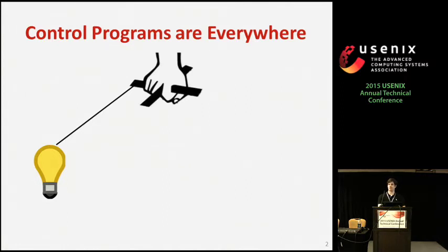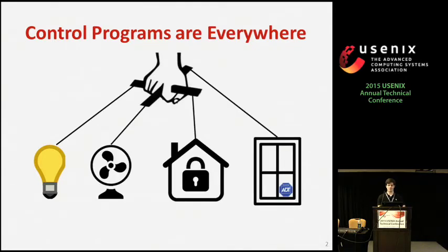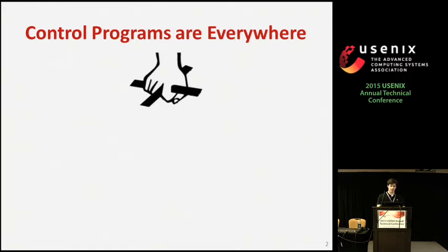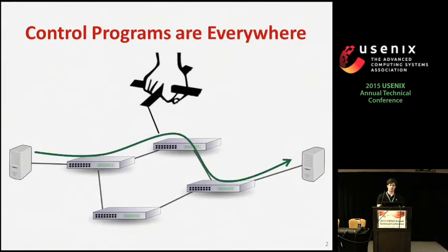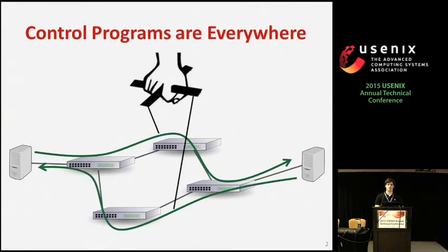We focused on two different control systems: home automation and software-defined networks. In home automation, we have a control script managing the state of devices like locks and lights and alarms, which have become cheaply available over the last couple years. In software-defined networks, we have this separation of the control and data plane that allows a program running on the controller to add and remove forwarding rules in switches based on a global view of the network.